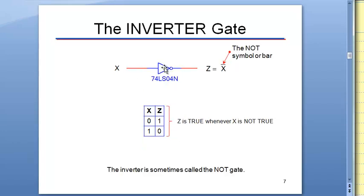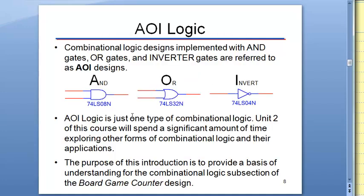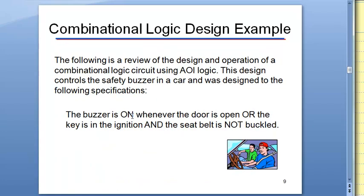The inverter looks like a triangle with a little circle, and the chip is the 74LS04. Basically, the output is the opposite of whatever your input is. The symbol for NOT is a line over the top — an overbar. You might also see an apostrophe or a backslash, but for our purposes in this class, we'll use the overbar. That's our combinational logic.